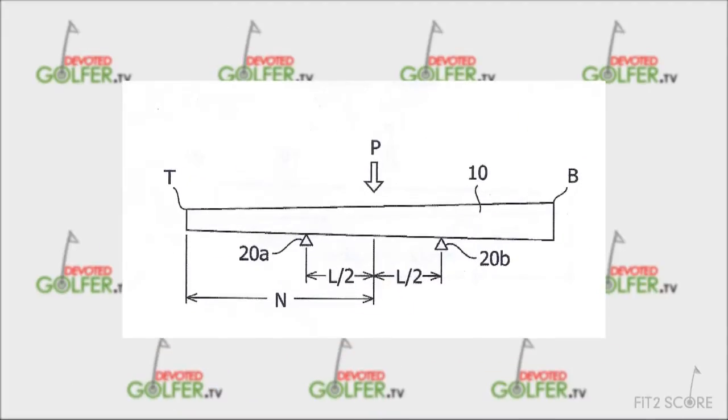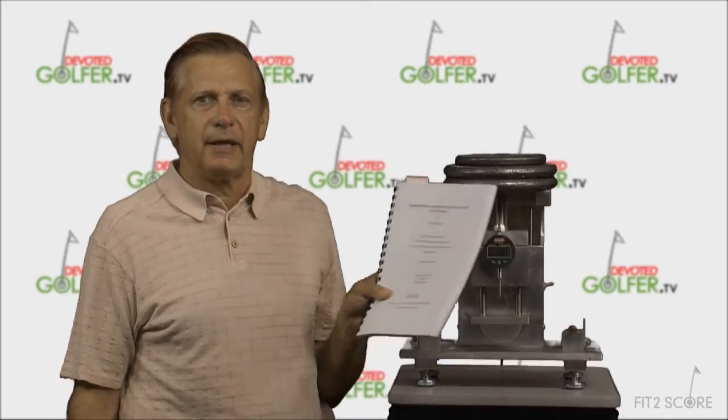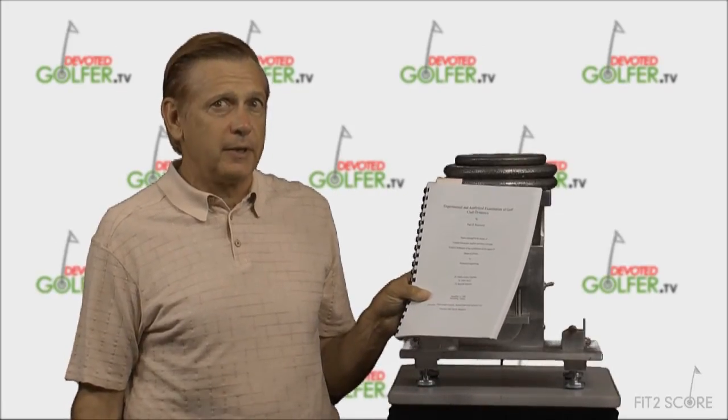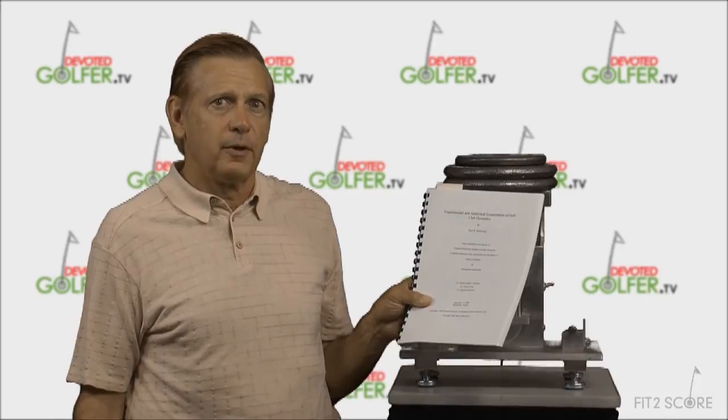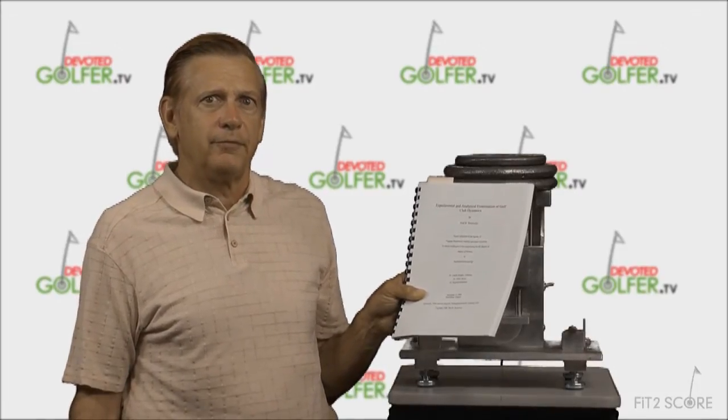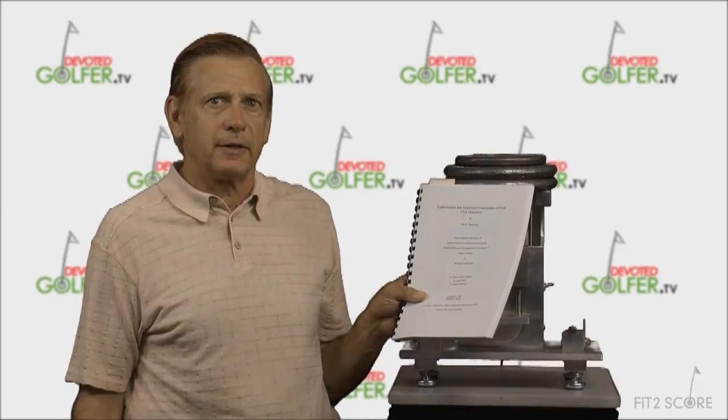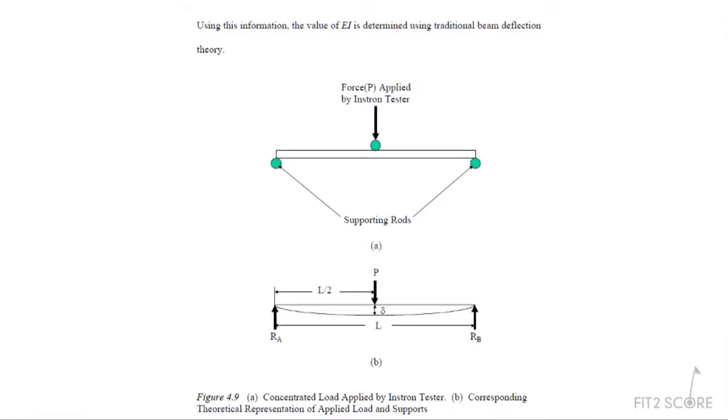This drawing from that patent illustrates the technique. This presentation is not about new technology. In my hands is a 1998 mechanical engineering master's thesis exploring golf club dynamics. The author, Paul Brontward, used EI to define the stiffness of the shaft used in his modeling, and here on page 57 is the description of the process defining shaft stiffness with EI measurement.